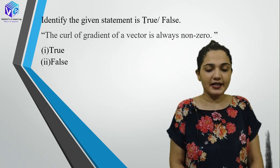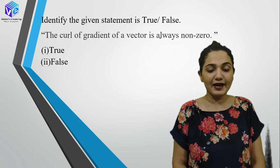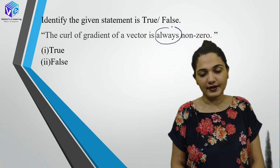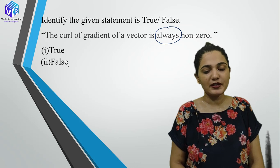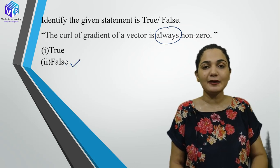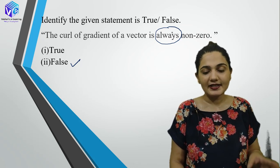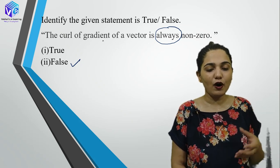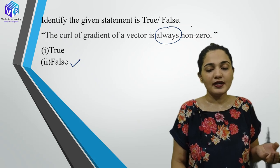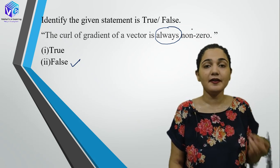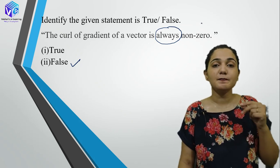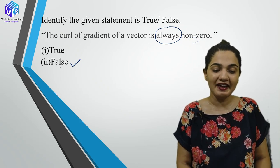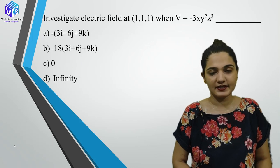Identify: true or false — the curl of gradient of a vector is always non-zero. Trick: whenever the word 'always' appears, the answer is mostly false. Gradient is a vector, curl of a vector can be zero — for instance when two vectors are parallel, their cross product (curl) is zero. So this is false.